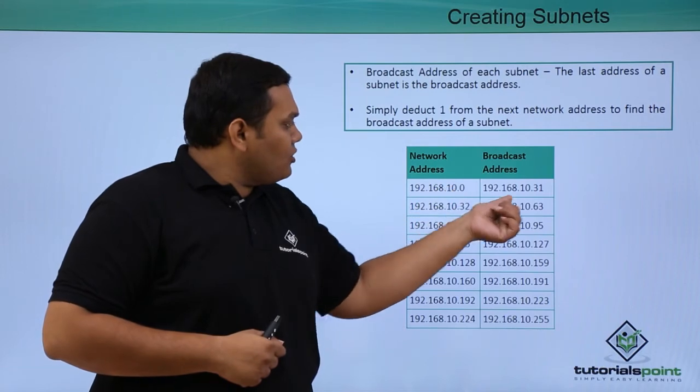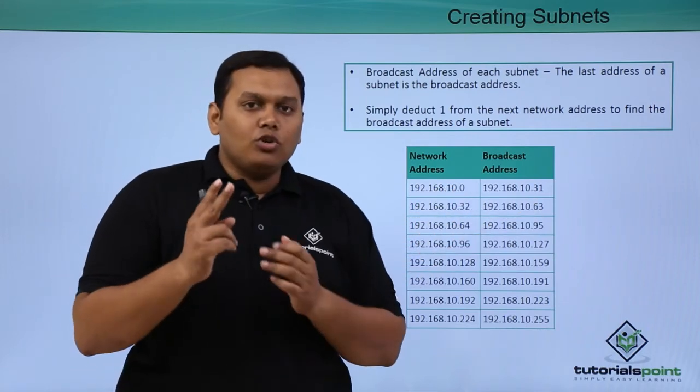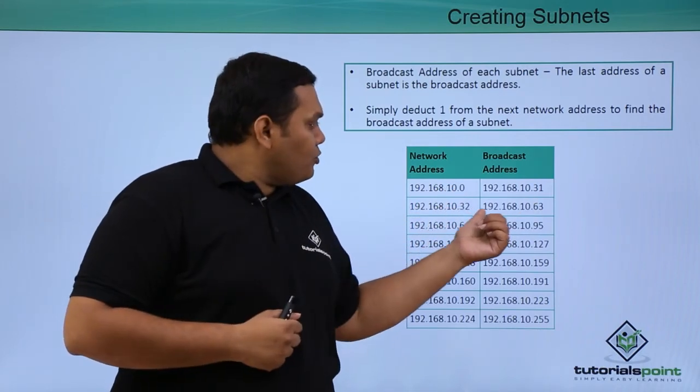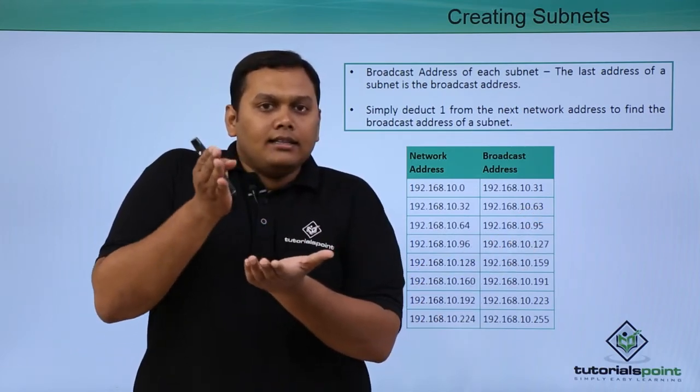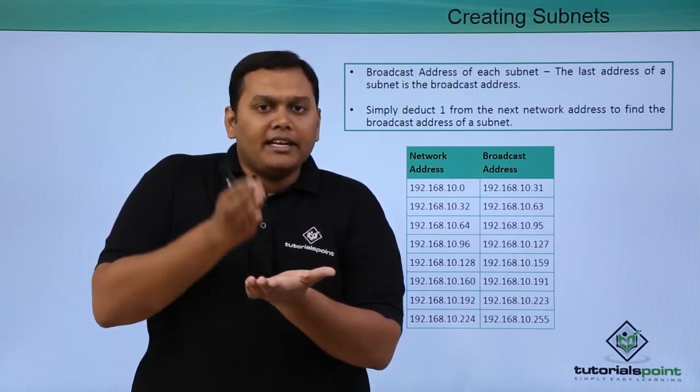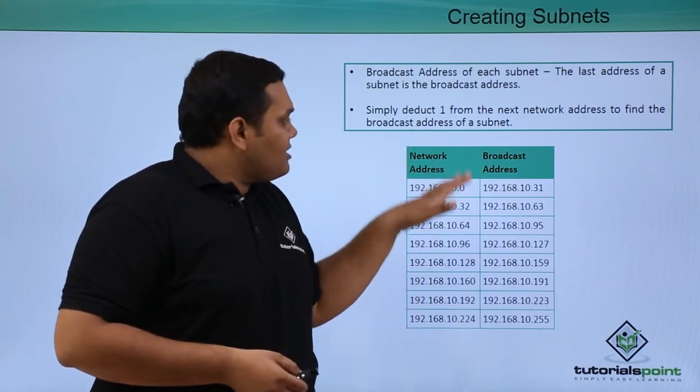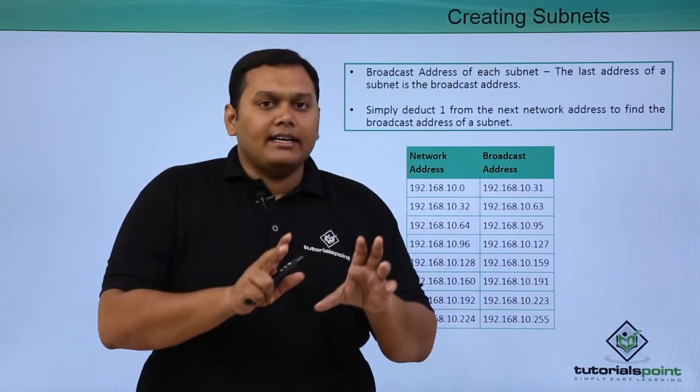Here, 0 to 31 is 32 hosts we have. The same way 32 to 63 we have 32. So here 30 hosts each per 8 networks, so this is classified here. This is how the subnets are created.